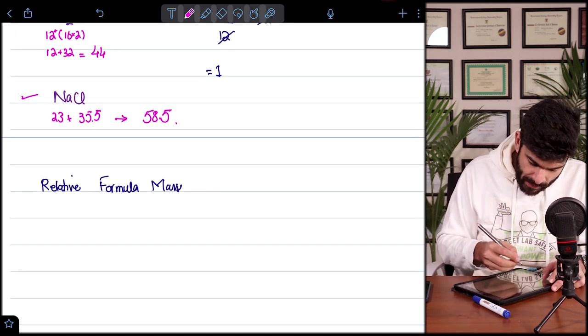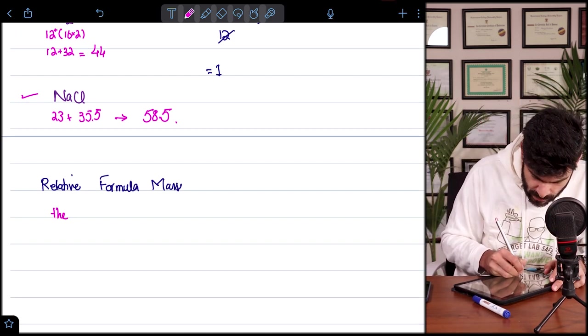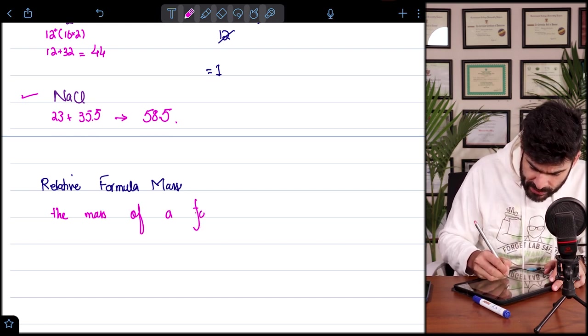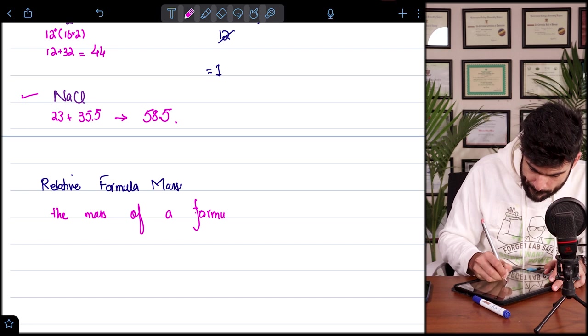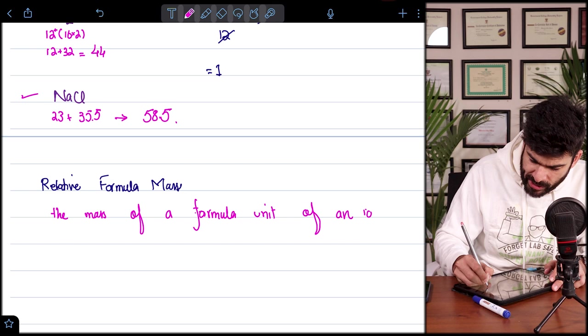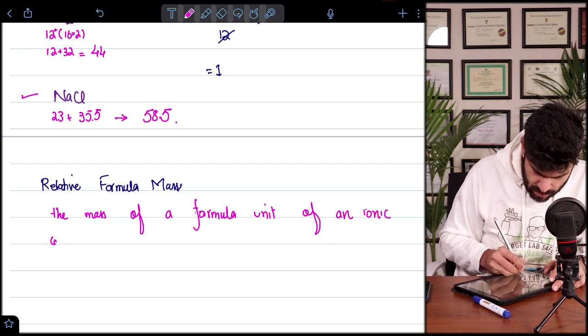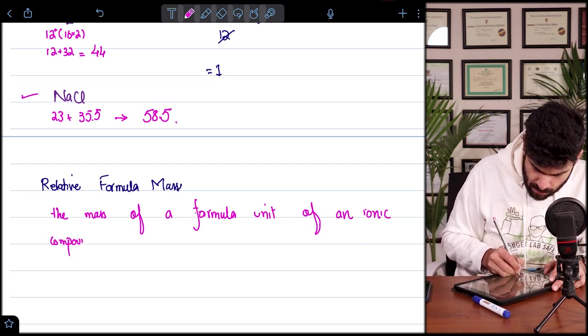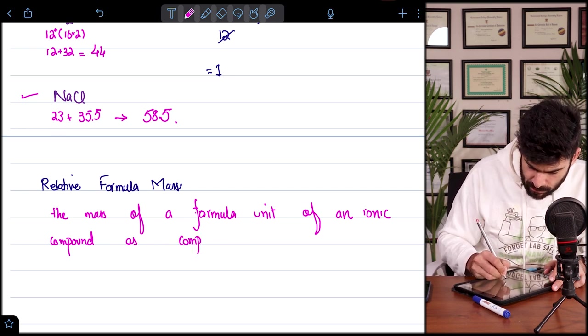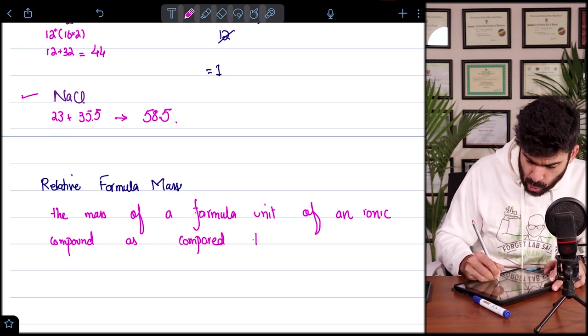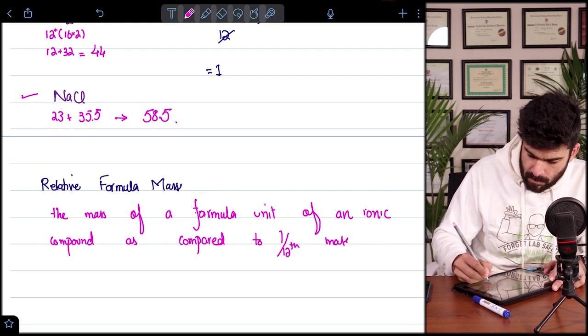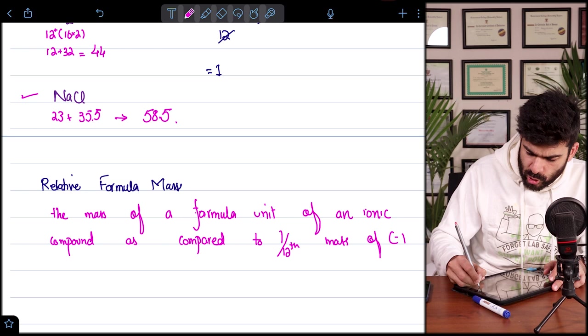But the only difference is the difference with the terminologies. So relative formula mass, the mass of a formula unit of an ionic compound as compared to one-twelfth mass of carbon-12 isotope.